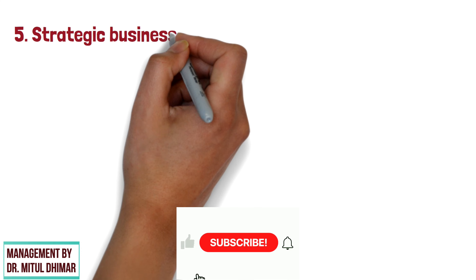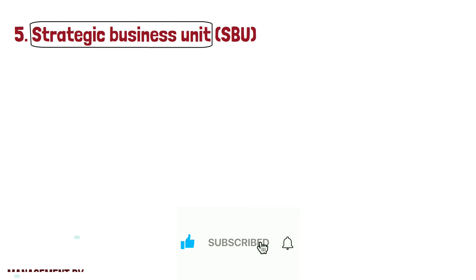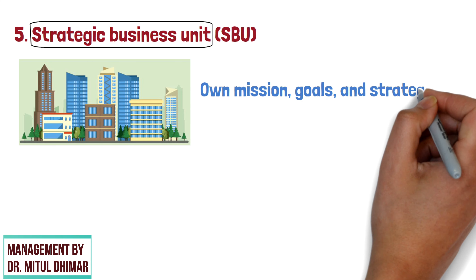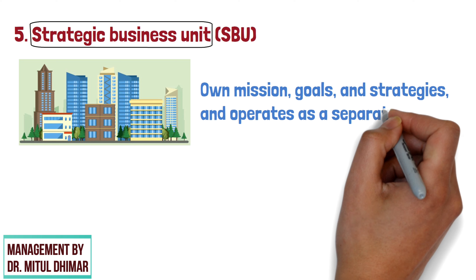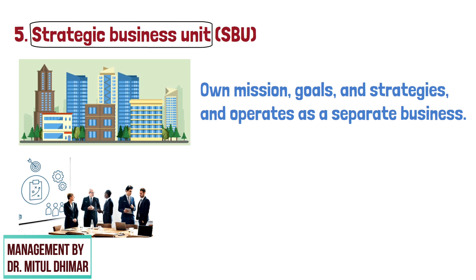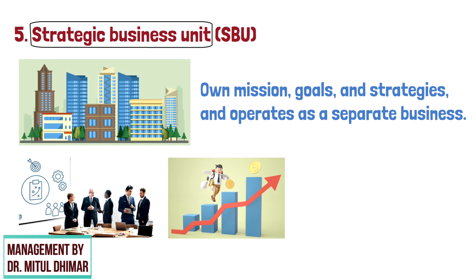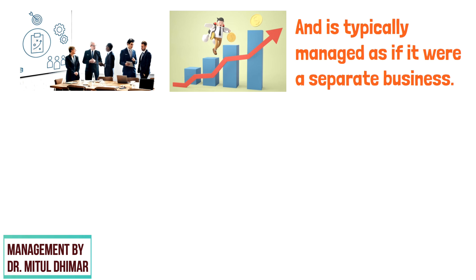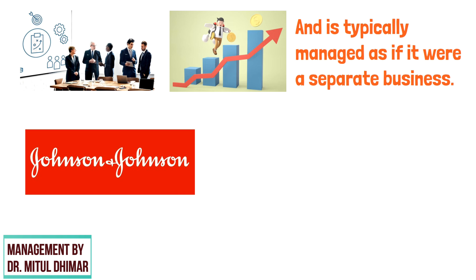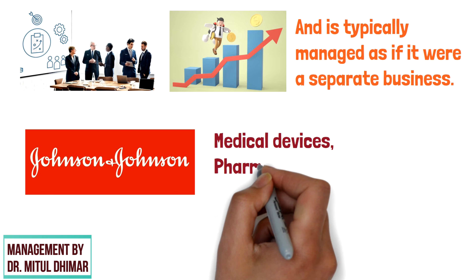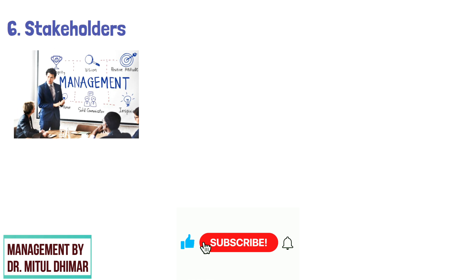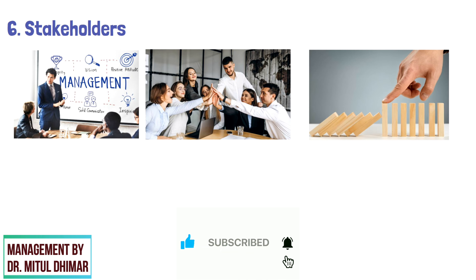A strategic business unit, or SBU, is a distinct unit within a company that has its own mission, goals, and strategies, and operates as a separate business. Each SBU is responsible for its own growth and profitability and is typically managed as if it were a separate business. For example, Johnson & Johnson has SBUs focused on medical devices, pharmaceuticals, and consumer health products.